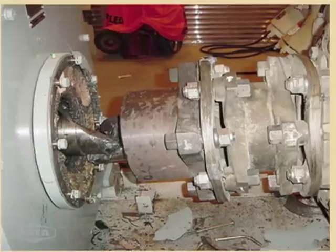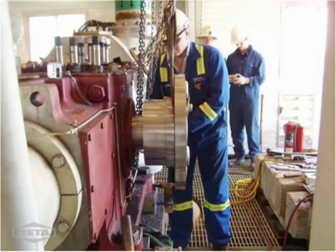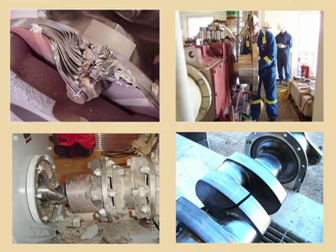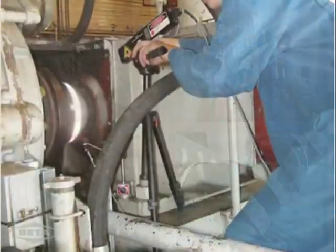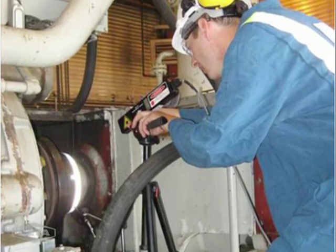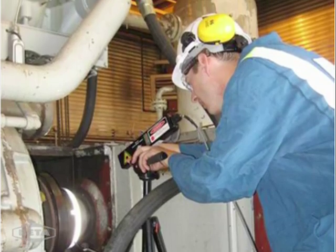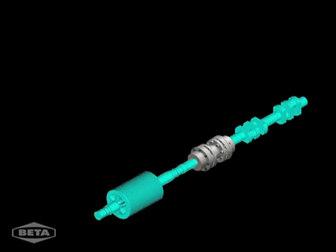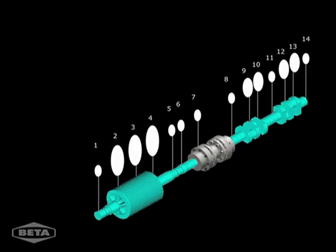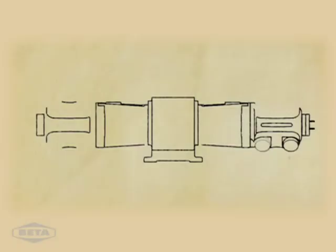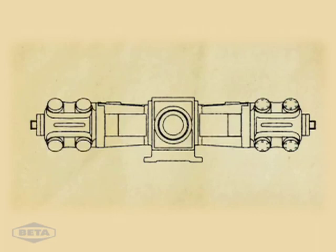Not to mention the downtime and cost if the unit is inoperable for one to two months. Torsional vibration is often called the silent killer because a failure like this occurs without warning. The best way to mitigate these failures is to order a torsional vibration analysis before a unit is built.